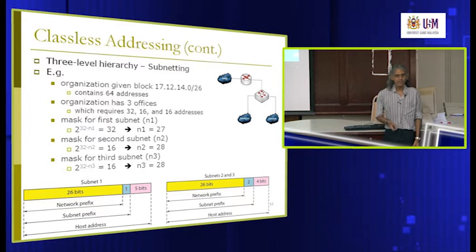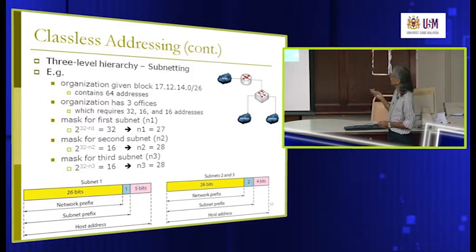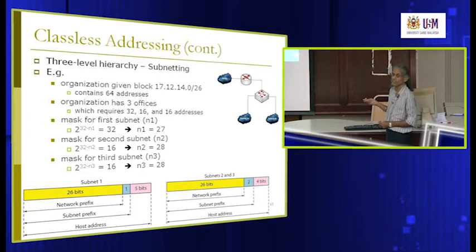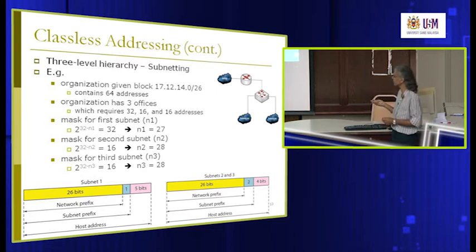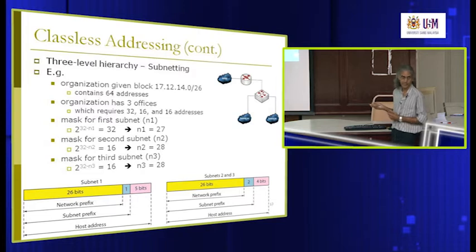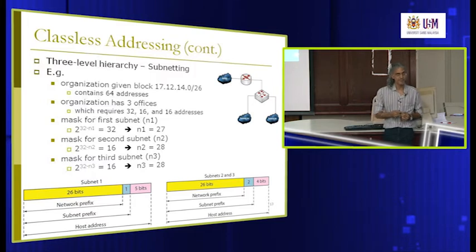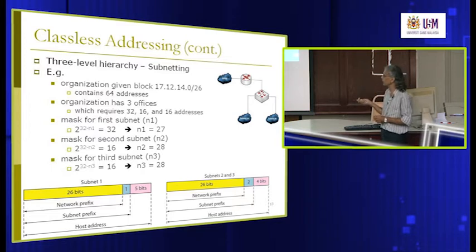So far we have done subnetting at one level. For example, our organization is slash 26 — 26 bits for the network prefix, and the remaining six bits for the host ID. Subnetting means we use some bits from the host ID to further divide into subnetworks. We use one or two bits, and the remaining four or five bits can be assigned to individual machines on individual subnets.